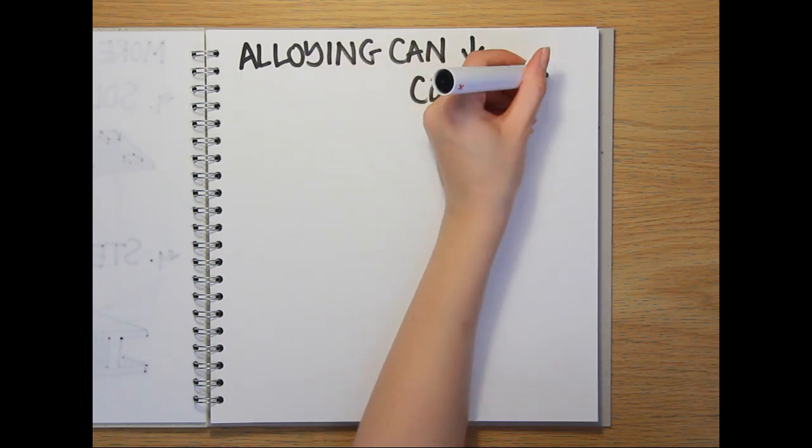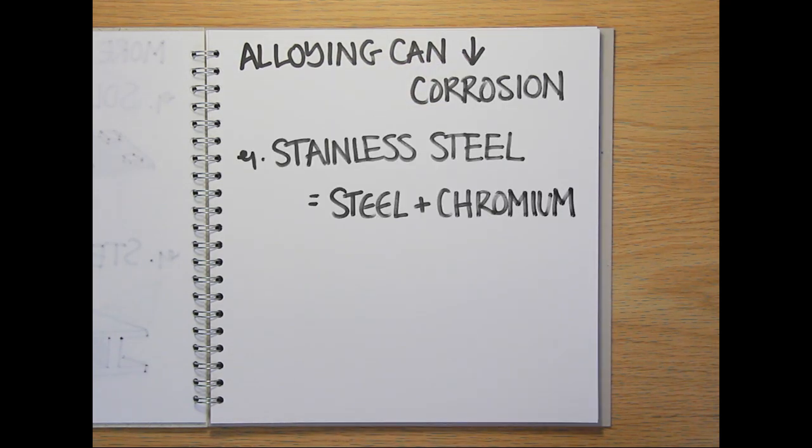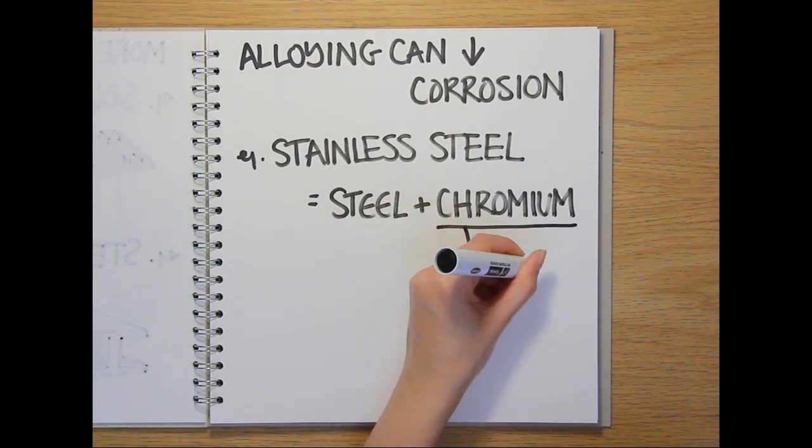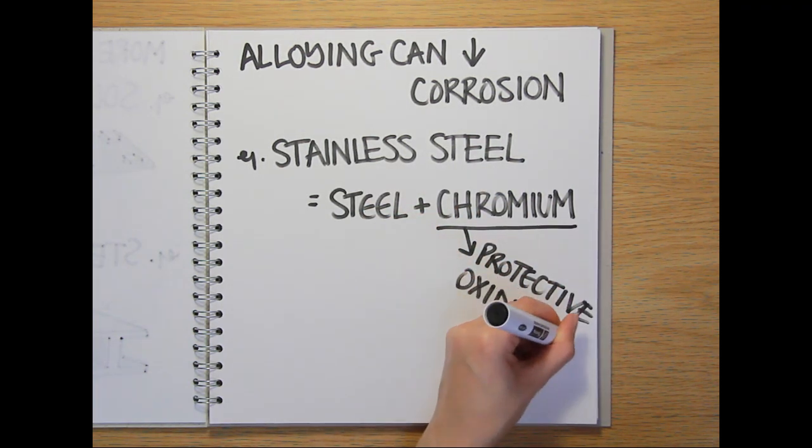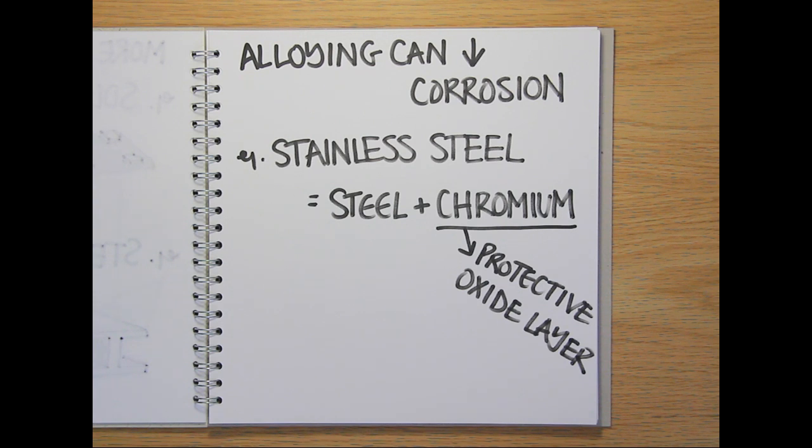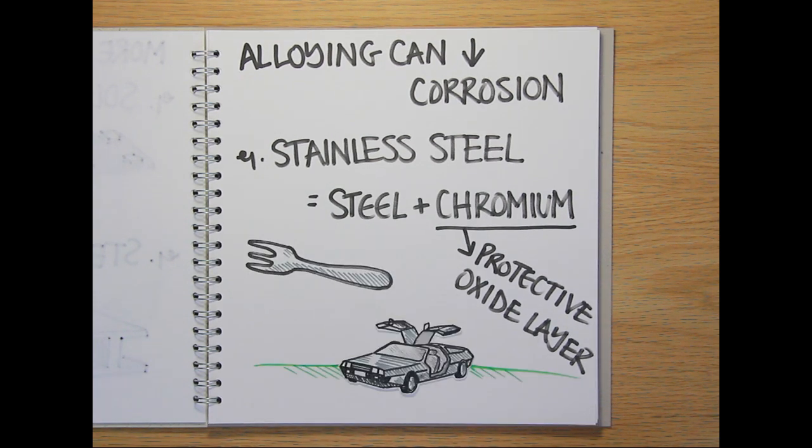Alloying can also prevent metals from corroding. Stainless steel, which is made by mixing steel and chromium, is protected from corrosion by a thin layer of chromium oxide that forms on the surface. And because it won't rust, it can be used for anything from cutlery to car parts.